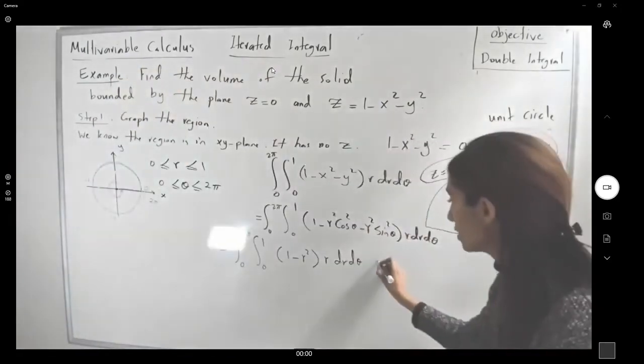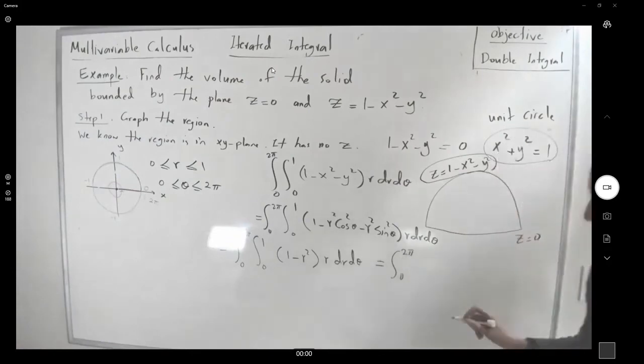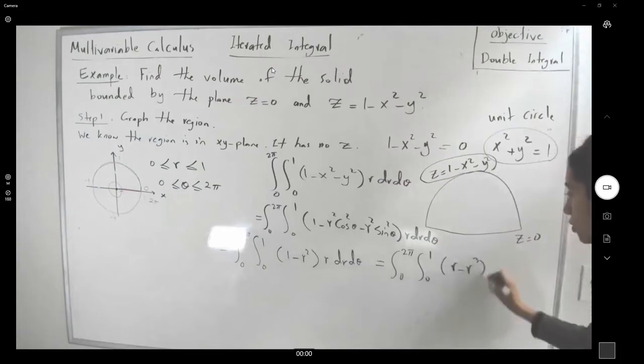Well, you can distribute r, which is equal to the integral 0 to 2π, and 0 to 1, r minus r cubed dr d theta.